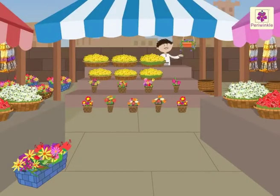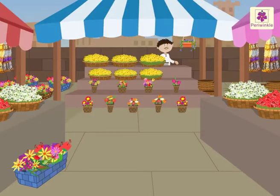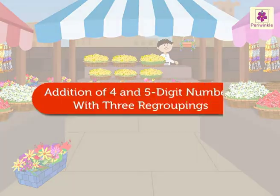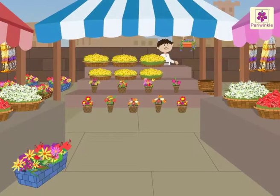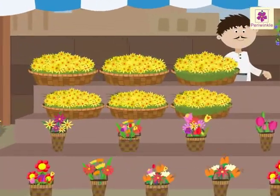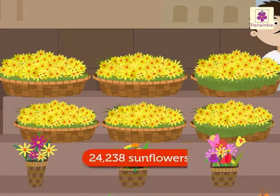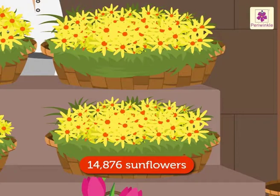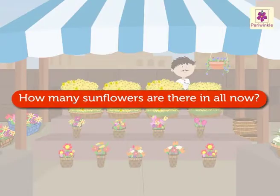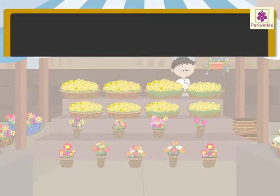We are at the flower market today. Let us learn addition of four and five digit numbers with three regroupings with these beautiful flowers. There are twenty-four thousand two hundred thirty-eight sunflowers already at the market. Fourteen thousand eight hundred seventy-six more are brought. How many are there in all?